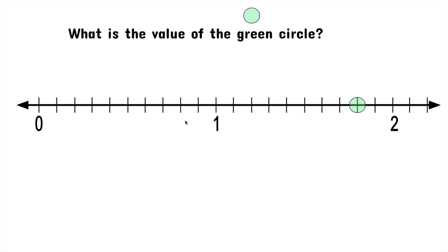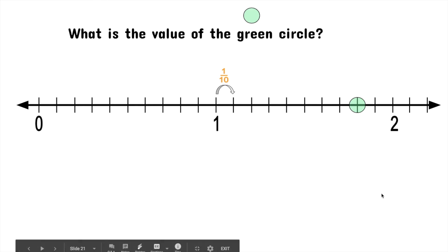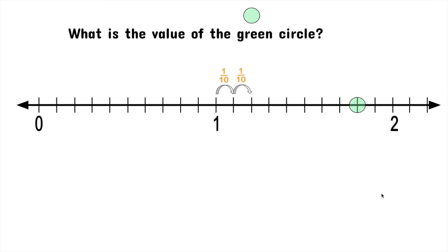In this situation, we still have the number line broken into ten equal sections. From here to here is ten sections, and then from here to here is also ten sections. But we don't need to start from zero this time — we can start from this whole number right here and count up. So from here to here, we already said there's ten equal parts, so each jump is one tenth. So then this is one tenth, that's one tenth, and that's another one tenth.